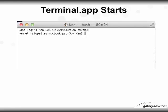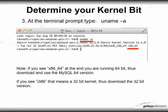The Terminal app will start and a window like this will appear. At the terminal prompt, click in it and type in 'uname -a'. When you hit Enter, you're going to get a message back. If you see x86_64 at the end, you are running a 64-bit machine — download and use the MySQL 64-bit version. If you see i386, that means a 32-bit kernel, so download the 32-bit version.